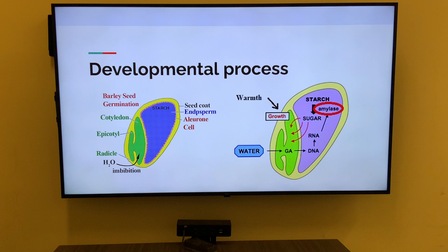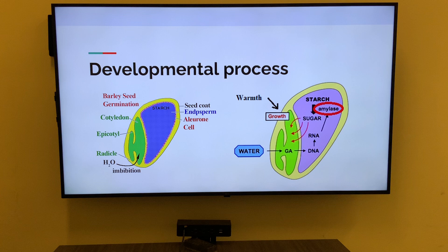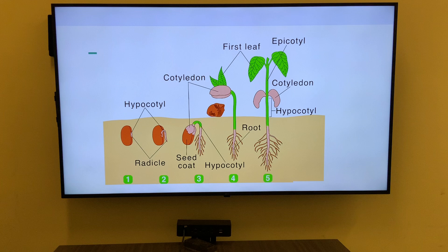Respiration is a process by which the seed utilizes the stored food reserves to produce energy for growth. Oxygen is absorbed by the seed and used in the breakdown of carbohydrates, releasing energy and producing carbon dioxide and water.